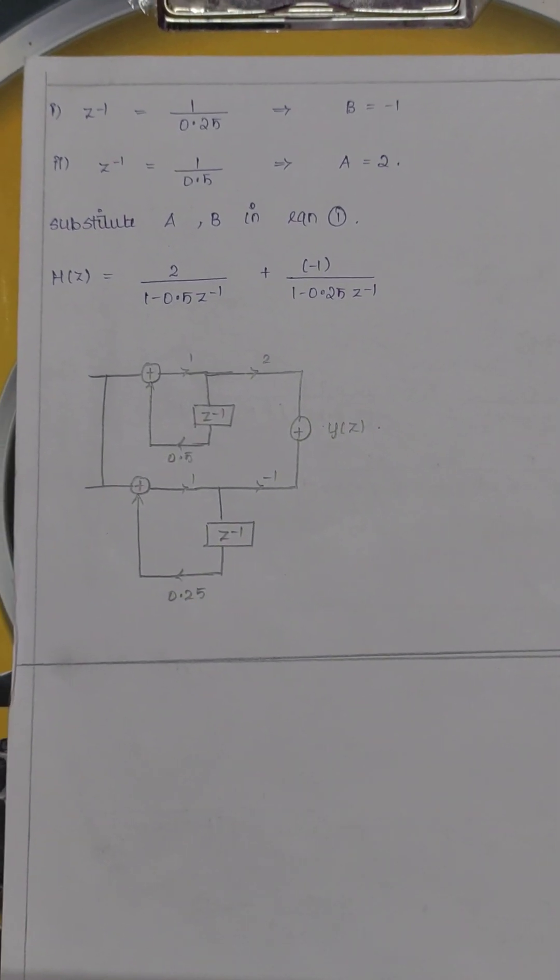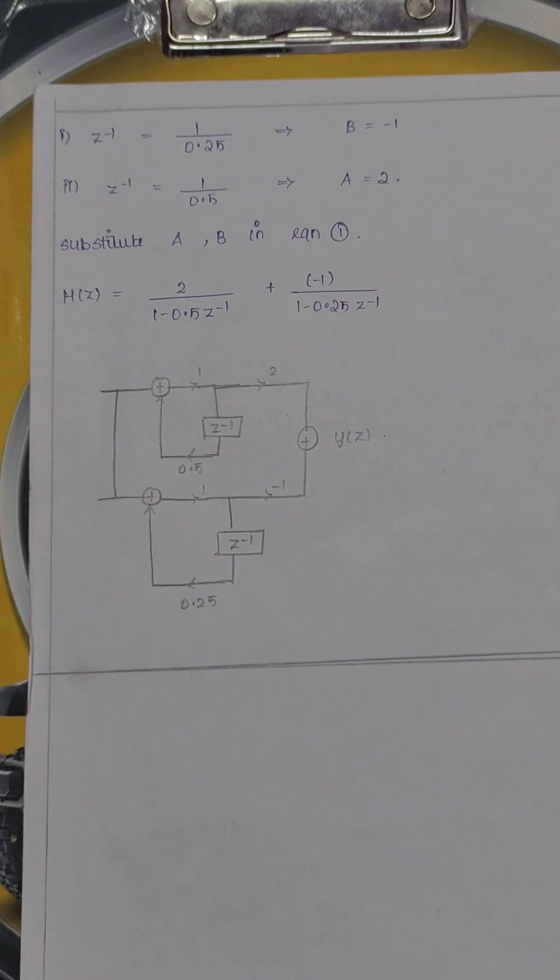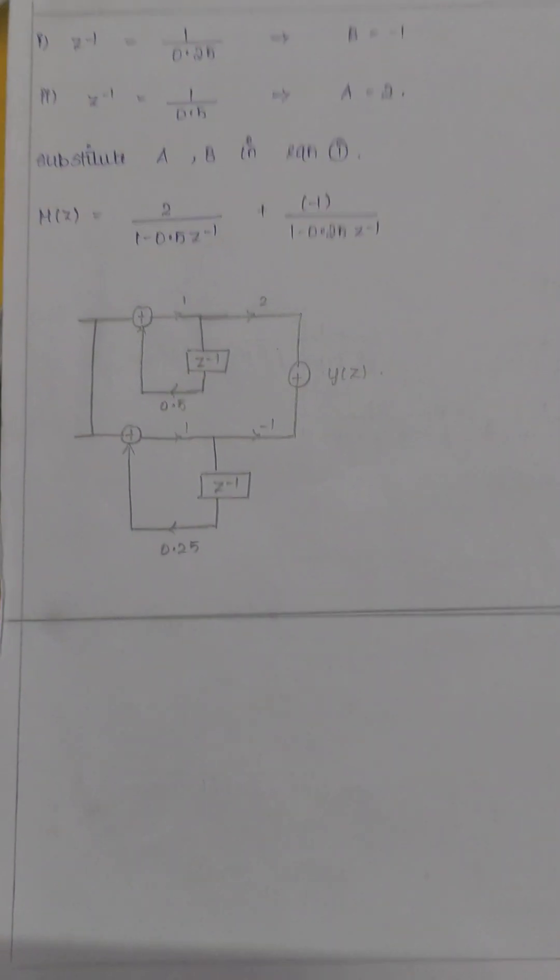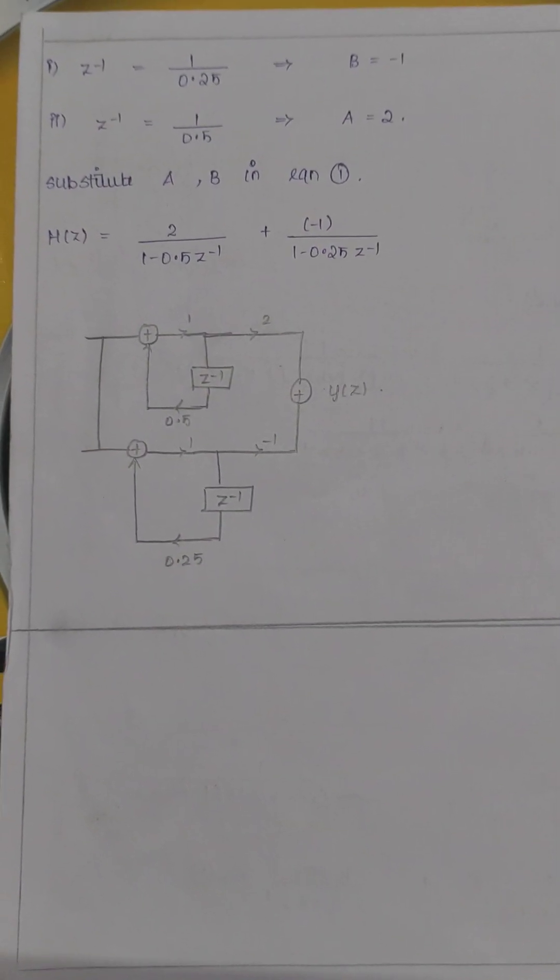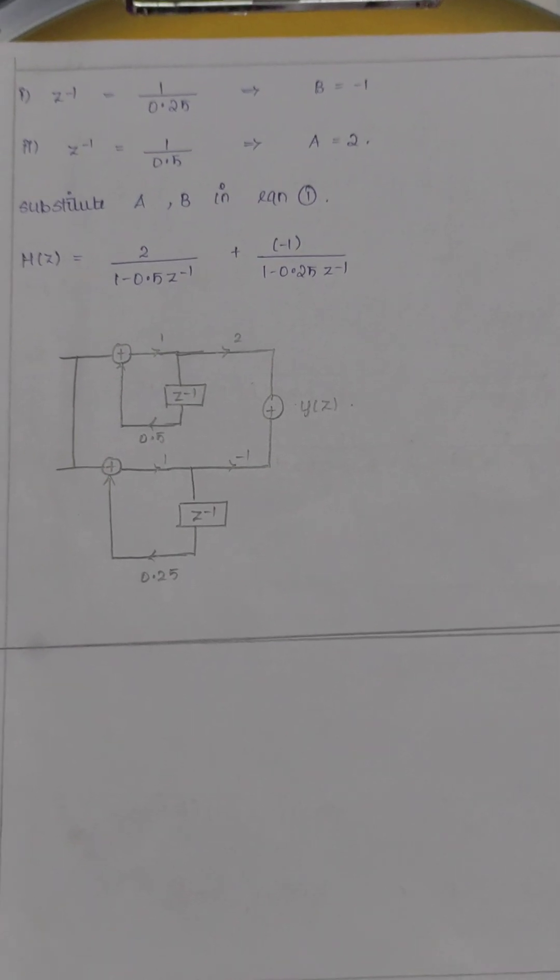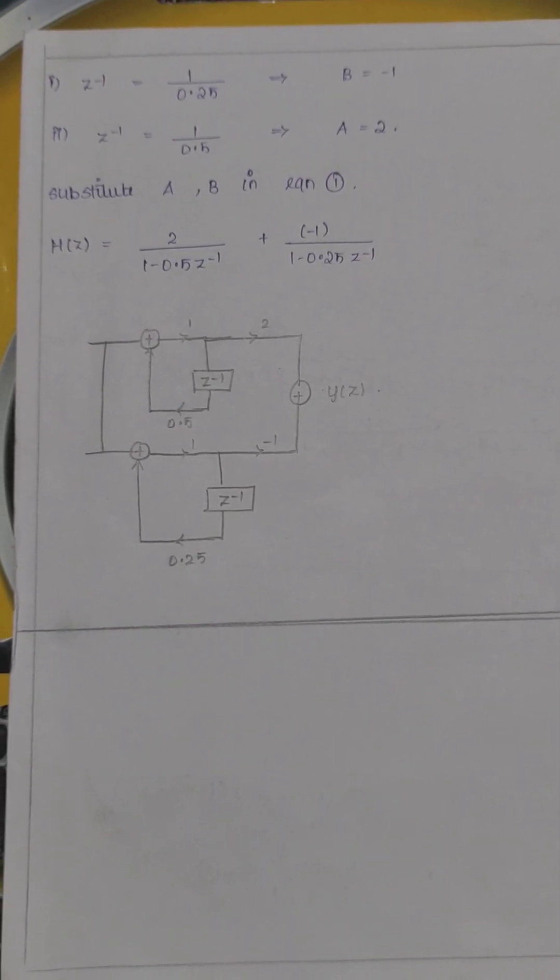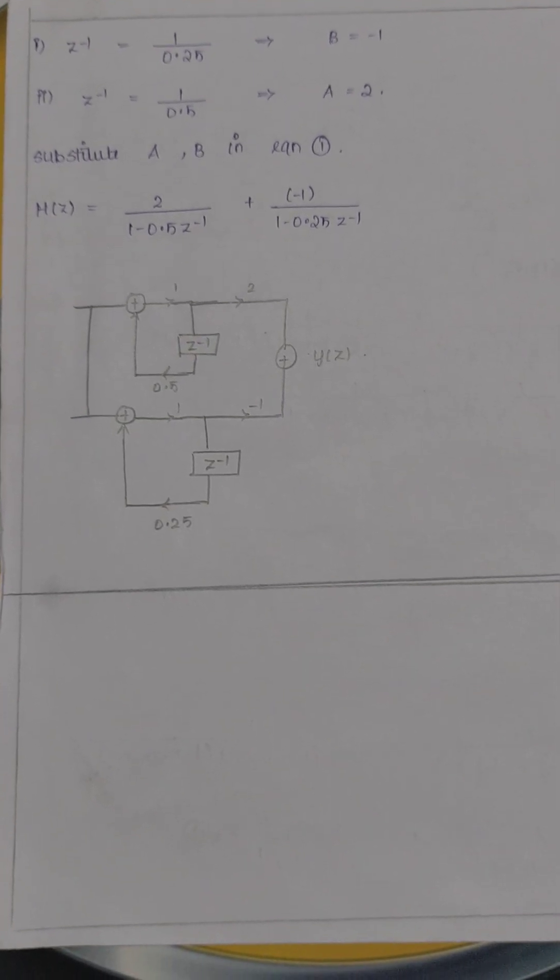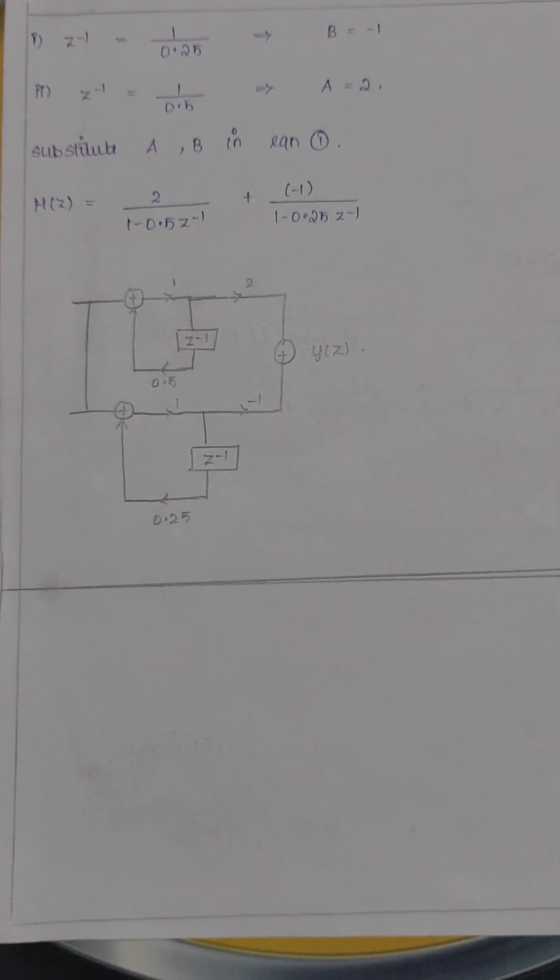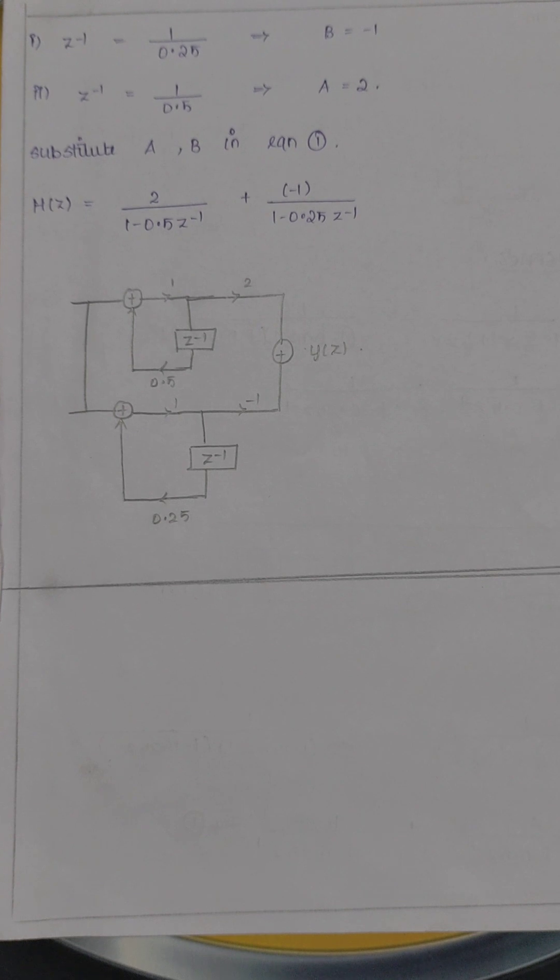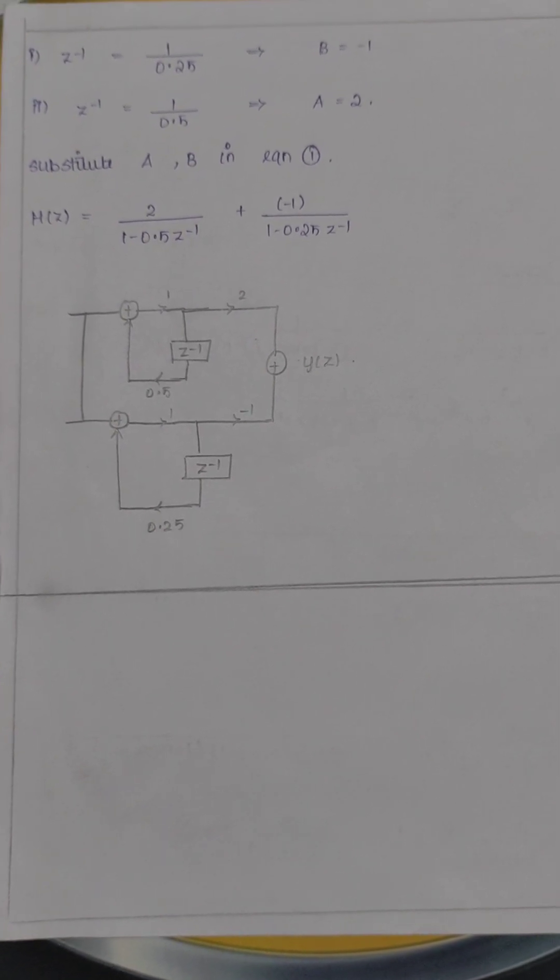First value 1 by 0.25, when I substitute and find the partial fraction, B value equals minus 1. When I substitute 1 by 0.5 value z inverse, A equals 2. So substitute all the values, A and B. Therefore, H(z) equals 2 divided by 1 minus 0.5 z inverse plus minus 1 divided by 1 minus 0.25 z inverse.